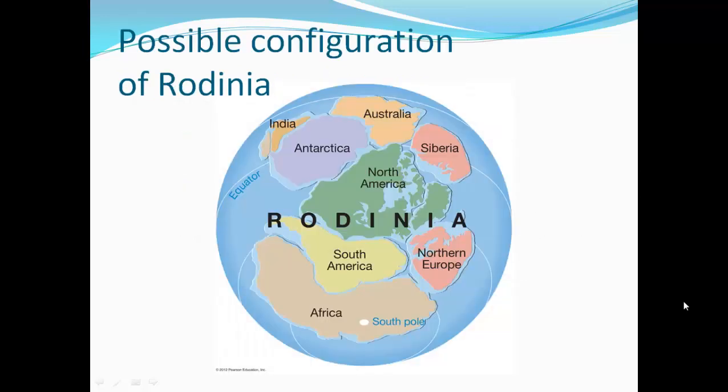Here is a possible configuration of Rodinia, which has North America, South America, Australia, Antarctica, Africa, Northern Europe, and India. The Phanerozoic encompasses 452 million years ago and is divided into the Paleozoic, Mesozoic, and Cenozoic eras. The Paleozoic era was dominated by continental collisions as Pangaea began to assemble, forming the Caledonian, the Appalachian, and the Ural Mountains.